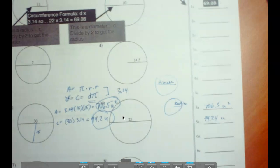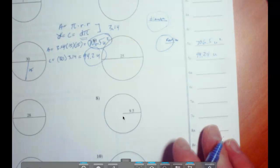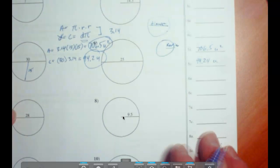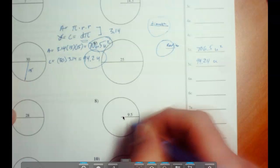All right, let's try just a part of this one here. So this one here, number 8, we're going to have to find the area and the circumference.